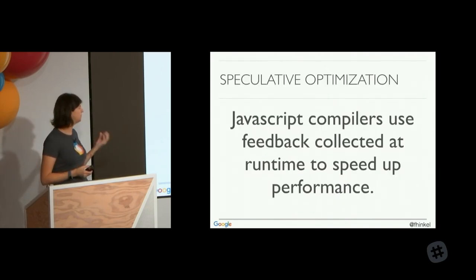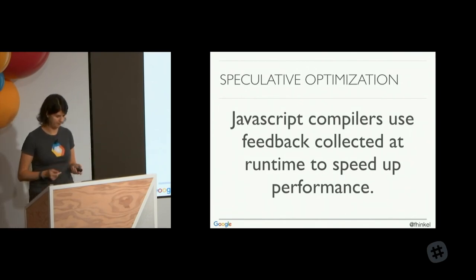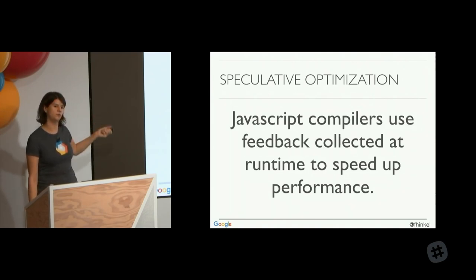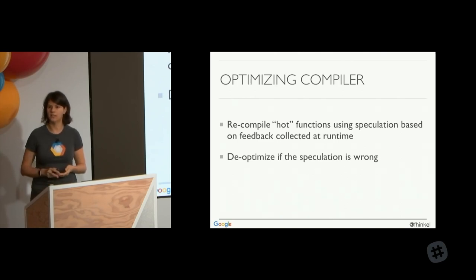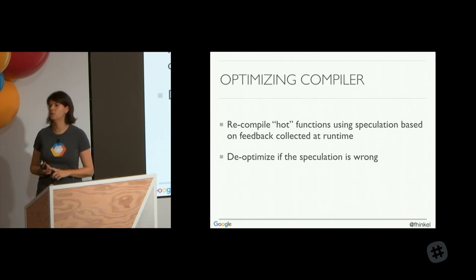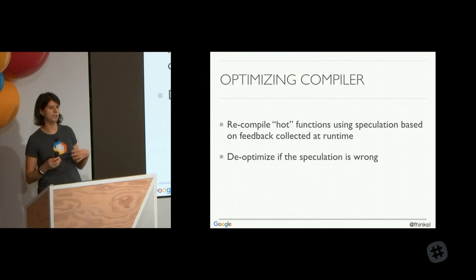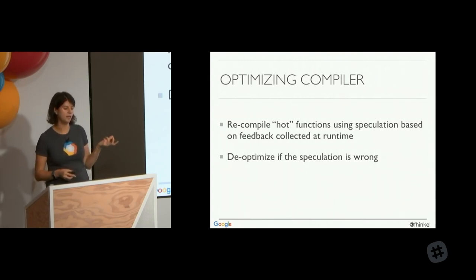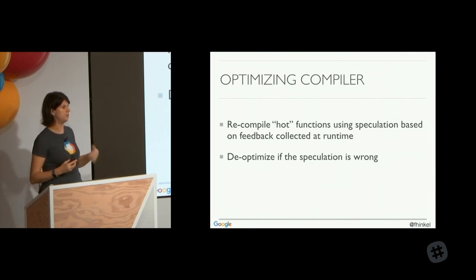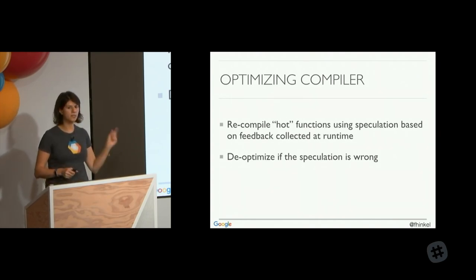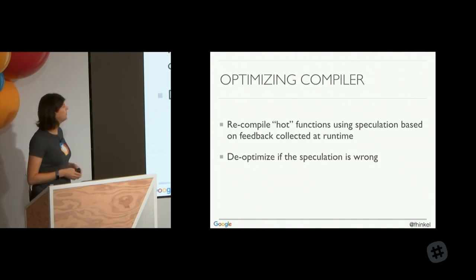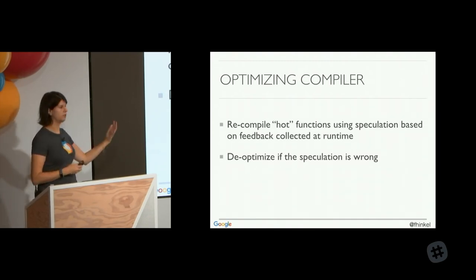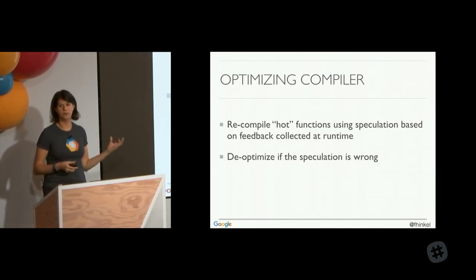JavaScript compilers use feedback collected at runtime to speed up performance. And that's not enough on its own to get near-C++ speed. Since 2011, starting with Chrome and followed by other major engines, they all have at least two compilers: a baseline compiler and at least one optimizing compiler — Safari actually has two optimizing compilers. The optimizing compiler recompiles hot functions — functions run a lot — using runtime information. It speculates that future inputs will be similar to past inputs and optimizes machine code for that. If the speculation is wrong, it de-optimizes and falls back to the baseline compiler.